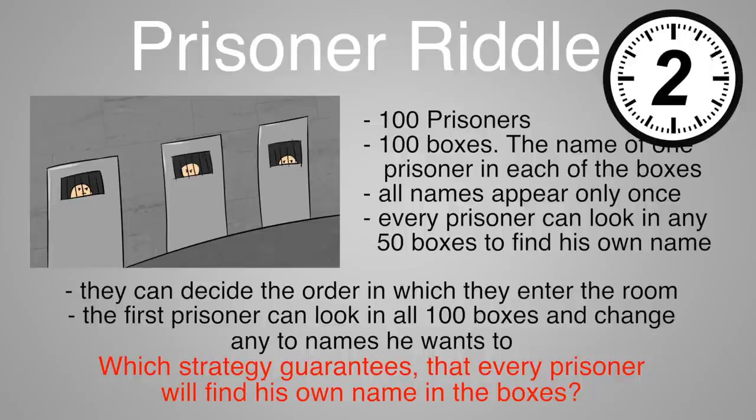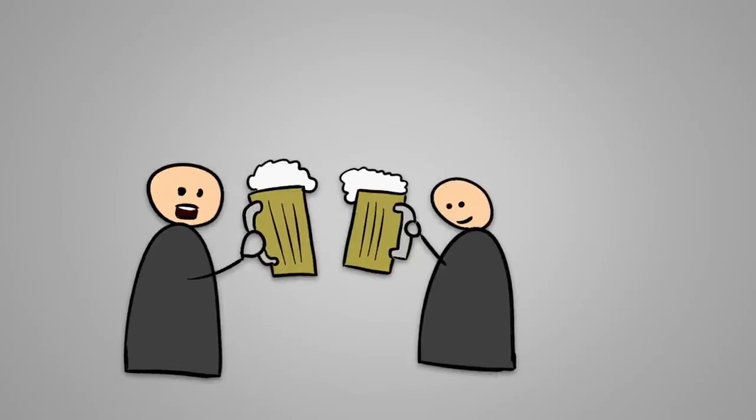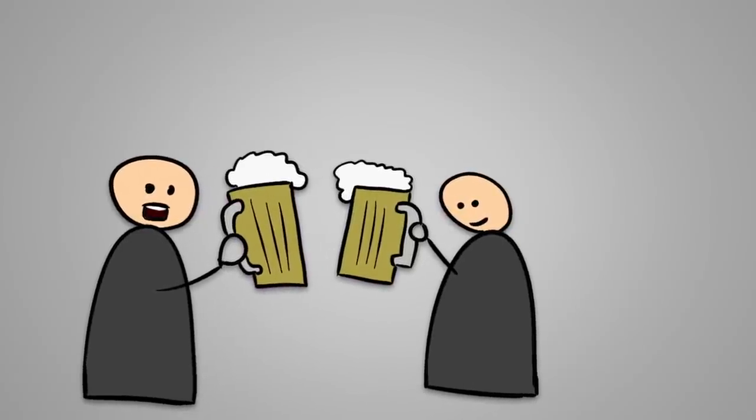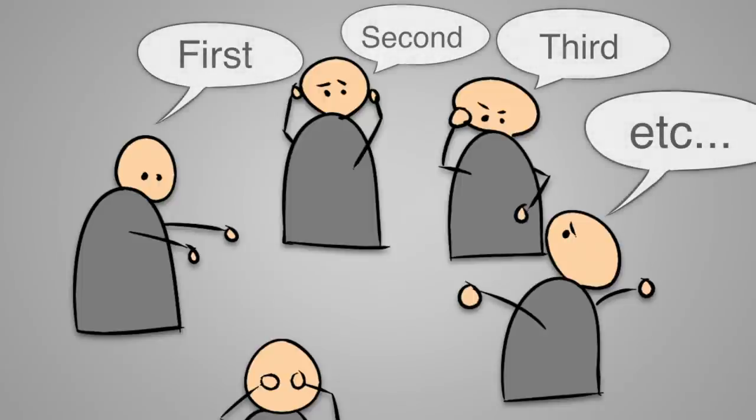3, 2, 1. Believe it or not, there is a strategy which guarantees that all the prisoners will be set free. Here is what the prisoners need to do. They decide the order in which they will enter the room and look inside the boxes. Then they need to memorize the name and the position of all other prisoners.